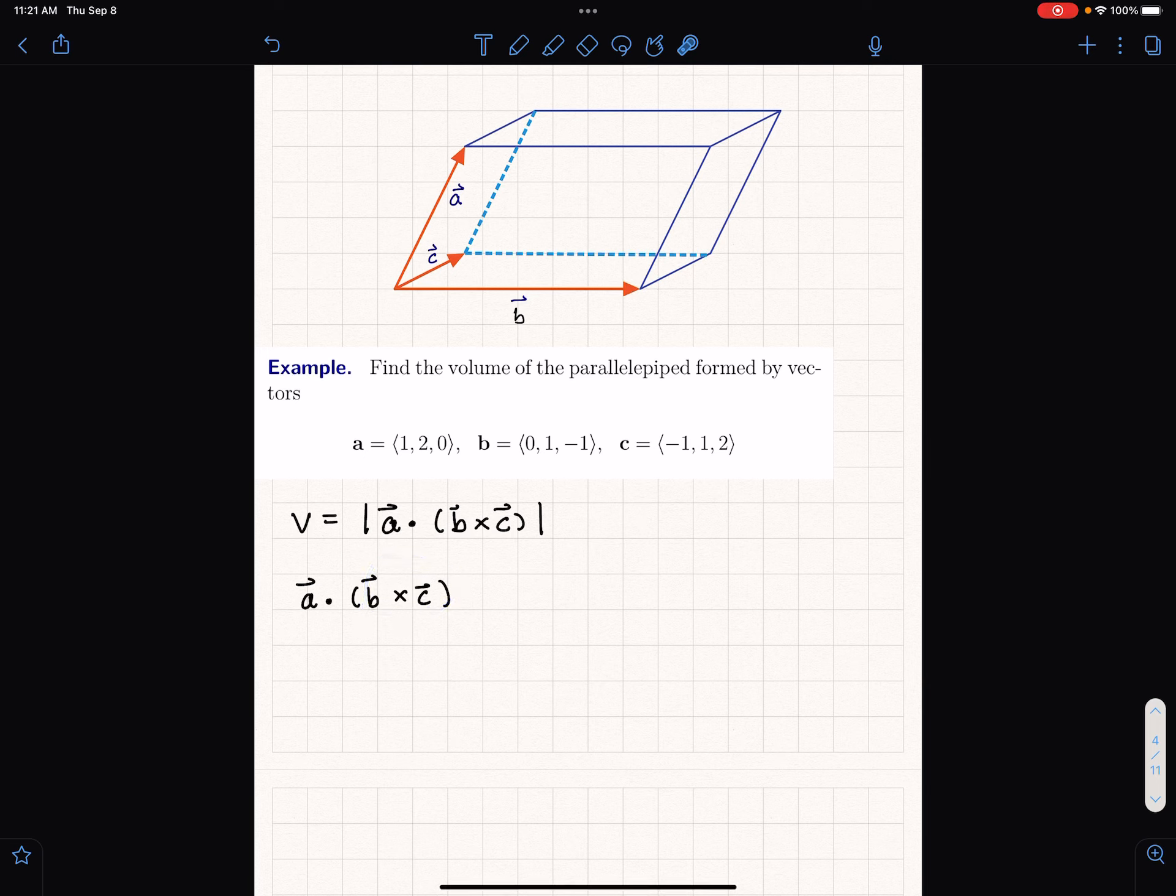We have shown in class that this is the same thing as the determinant of the matrix which consists of the rows given by a, b, and c. So as I'm showing here, this is the triple product.